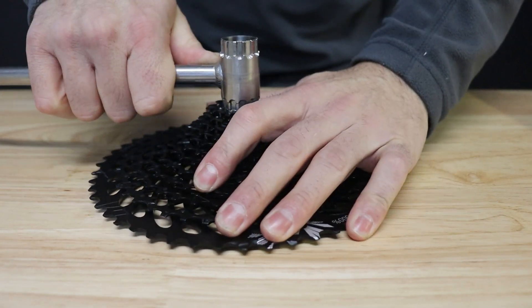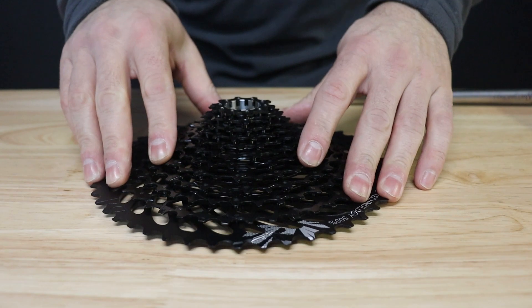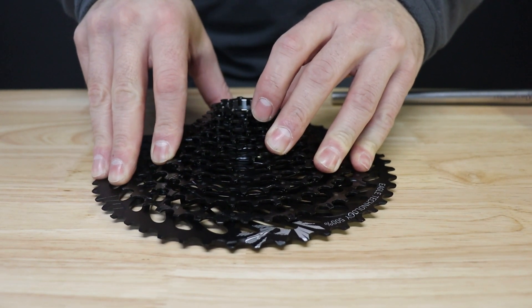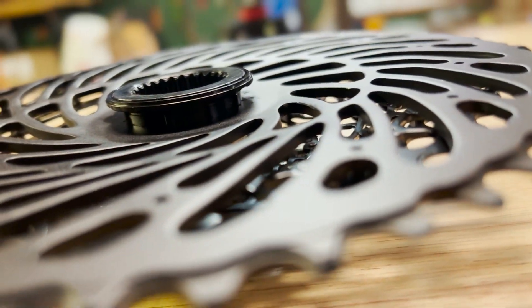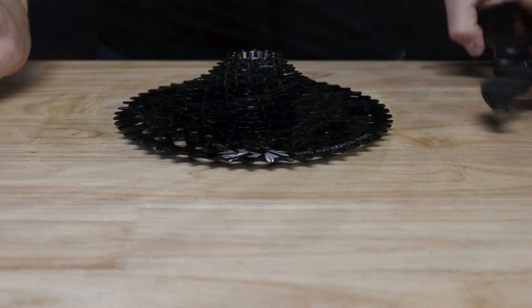Go ahead and cinch this down to manufactured torque spec. You'll notice that even when this is cinched down, the cassette still has some side-to-side play on top of the freehub body. Riding the cassette this way will lead to inconsistent shifting and potential damage to the cassette and freehub body.